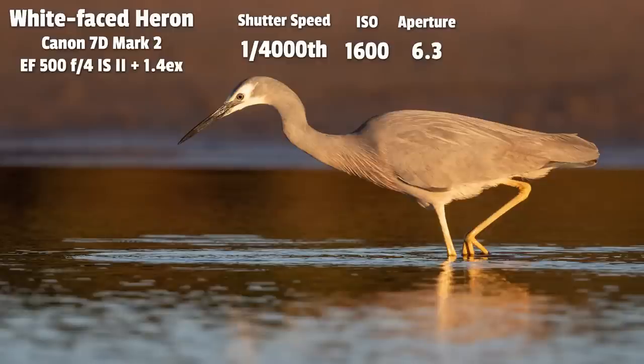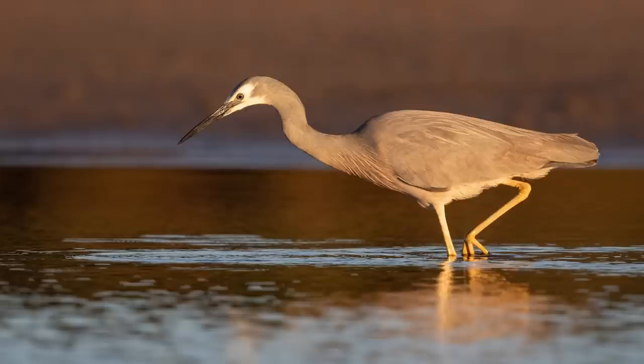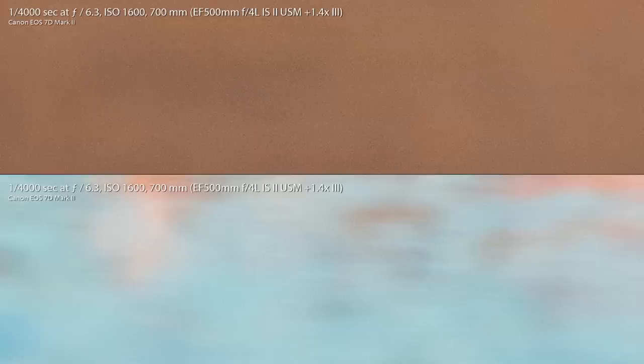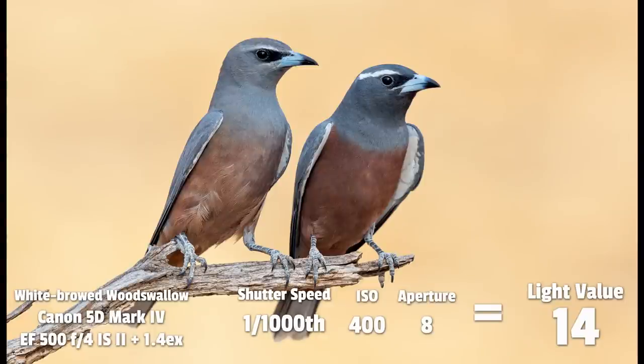An interesting tip: the darker your background is, the more noise there'll be. So just be aware of the color of your background — a lighter colored background will result in less noise. Here's an image of a white-faced heron where the majority of the image is quite dark and has quite a bit of noise, but the blue water at the bottom is brighter and has noticeably less noise. Same exposure, same camera, same photo — but different noise levels depending on background brightness. You'll see in a lot of my photos the background is quite light, and this image of wood swallows shows very little noise in that bright background.